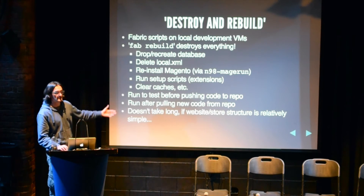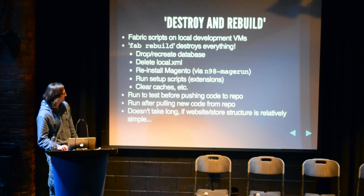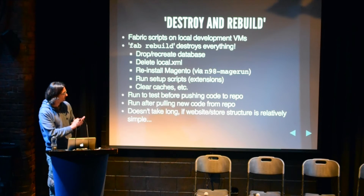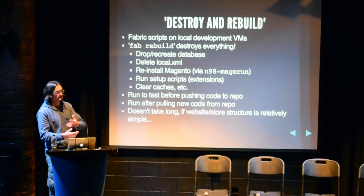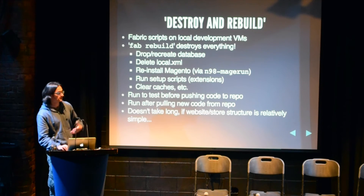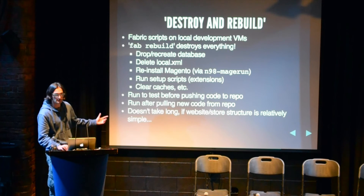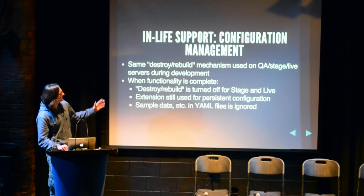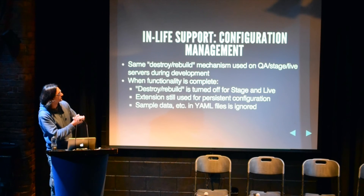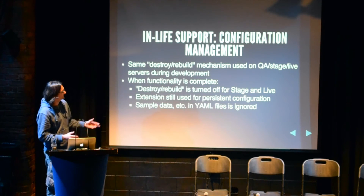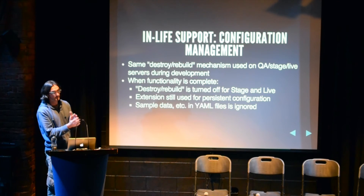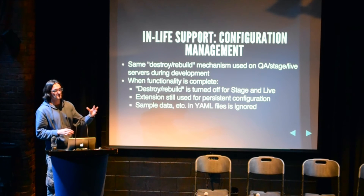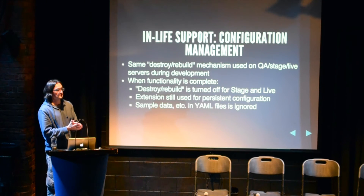For the destroy-and-rebuild approach, we use Fabric scripts on the local VM — you type 'fab rebuild' and it destroys the database, reinstalls Magento, and runs the setup scripts including the Configurator, which puts all your attributes and things back in. It takes about 30 seconds to a minute. You can run it before pushing code to the repository to verify everything works, and other developers can pull and run the same process to align with the latest configuration. Once the site has launched we don't destroy the live environment, but we still use the functionality to change configuration and create attributes — we just toggle things like sample product creation off for production.